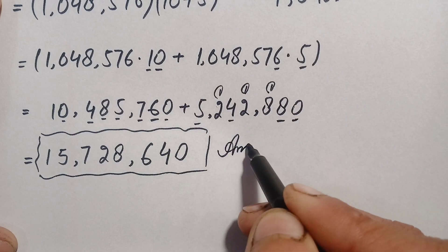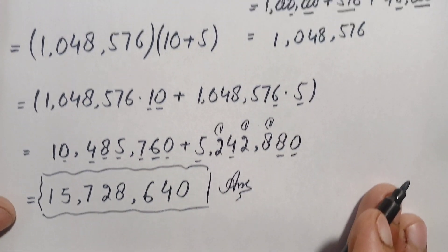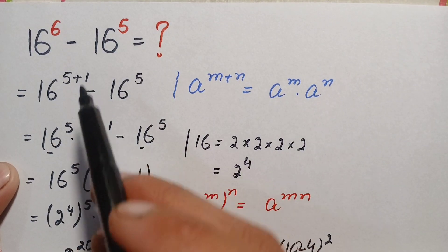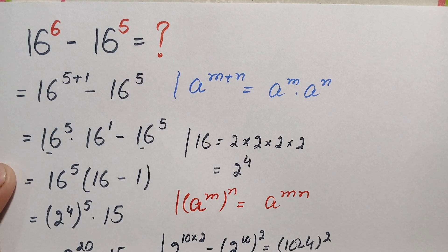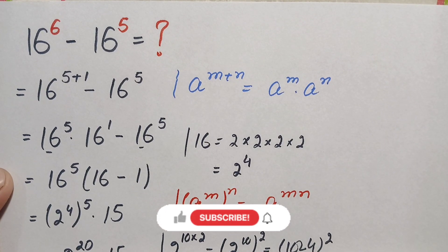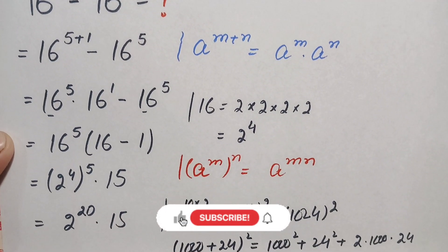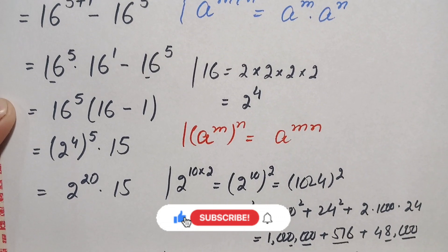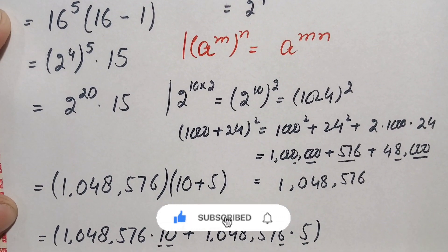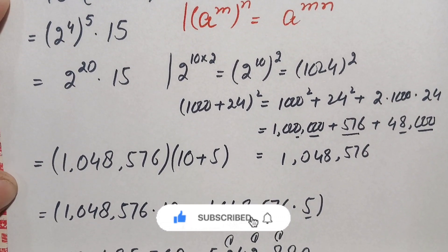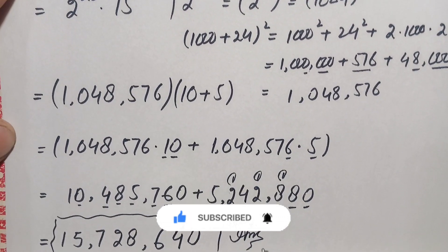So 15 million, seven hundred and twenty-eight thousand, six hundred and forty is our final answer and the value of this interesting and beautiful exponential math problem. If you liked this video, don't forget to subscribe to my YouTube channel for more interesting step-by-step math videos. Thanks for watching!